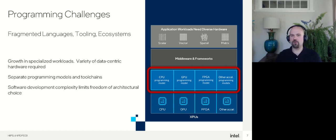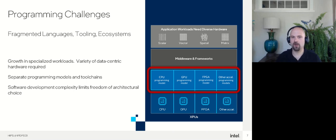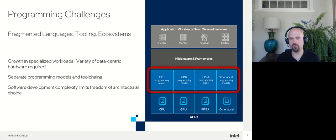Looking at the programming landscape today, there are a variety of architectures with different characteristics — some might have vector hardware, others matrix, some spatial like an FPGA. Different applications that perform well on one type of architecture often sit on top of middleware or frameworks, but they typically lower down to disjoint programming mechanisms today. That's fundamentally the problem OneAPI is trying to solve. If you want to move from a CPU to a GPU to an FPGA, the disjoint programming mechanisms really limit your ability to move between architectures. The cost of learning new tooling and making things work together is so high that it limits architectural freedom of choice.